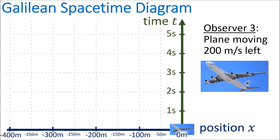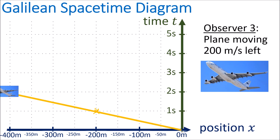Again, let's say that the plane starts at the origin. After one second it will have moved 200 meters to the left, or in other words it has a position of negative 200 meters. After two seconds it has a position of negative 400 meters. So the plane is traveling very fast to the left, and the world line follows a diagonal path moving up and to the left. Because the plane is traveling so fast, the plane's world line is closer to the horizontal than the car's world line.